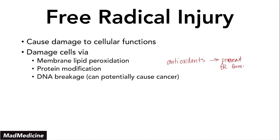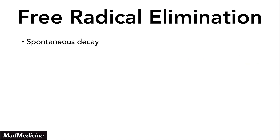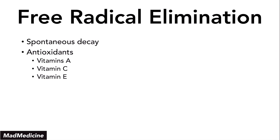Antioxidants are so important for our body because they can help prevent this DNA damage or DNA breakage from happening, and they can also play a role in preventing cancer. Free radicals can also induce cellular apoptosis, especially if they damage the cell very significantly, which they can do in an oxidative burst. The good thing is these decay spontaneously, and antioxidants in your body make sure that these free radicals aren't constantly wreaking havoc. Some of those antioxidants are vitamin A, vitamin C, and vitamin E.